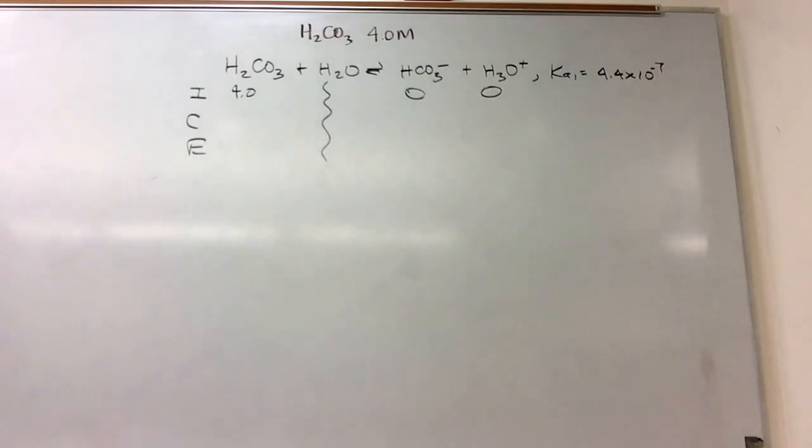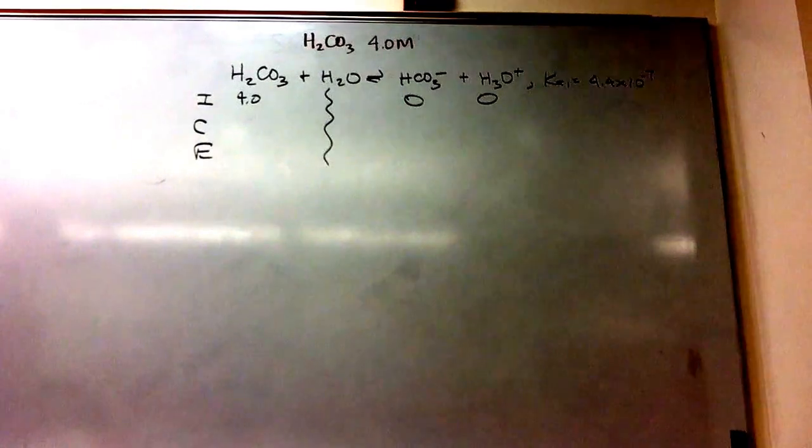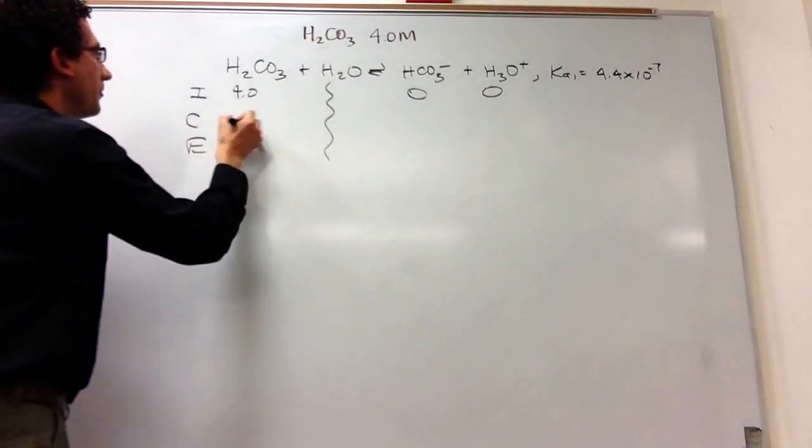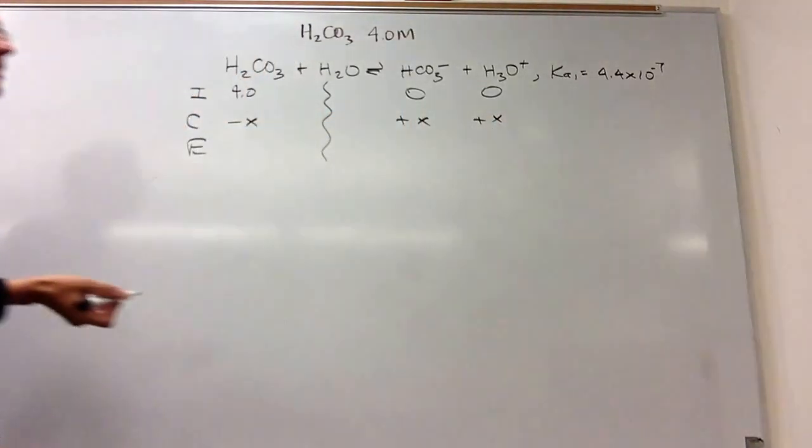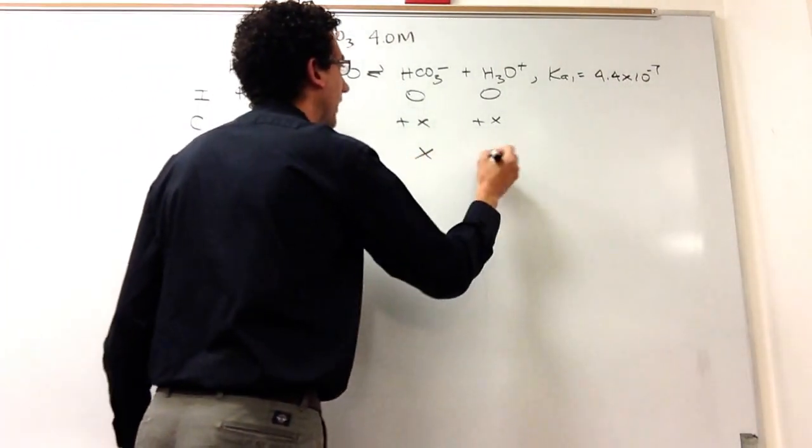The unfavored side is the right-hand side. It's got a zero on it, so we don't need to do any special stoichiometry. So you go minus X plus X plus X. So the plus is on the side of the zero. It has to shift right. 4 minus X, X, X.